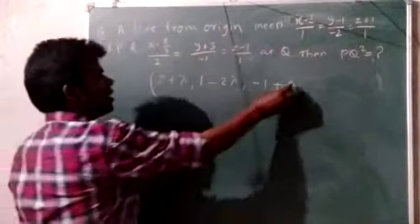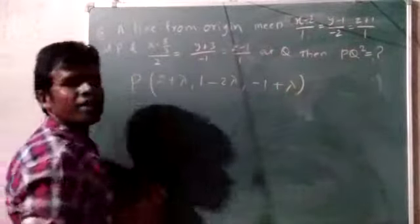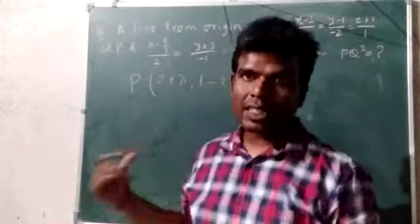We can write one point on this line because for some lambda, it has to be P only. So let this be P.